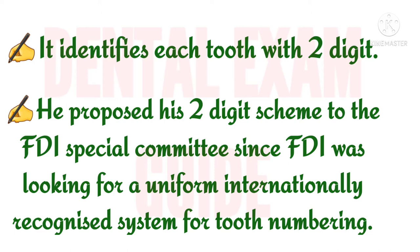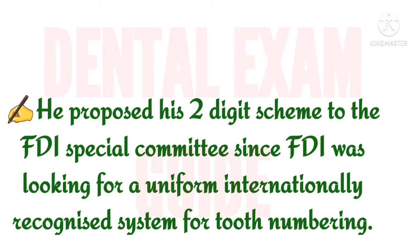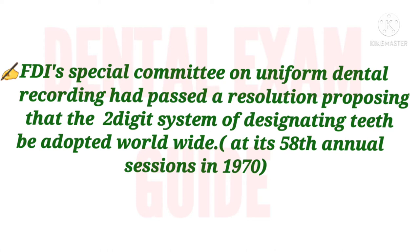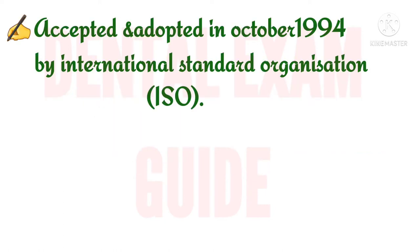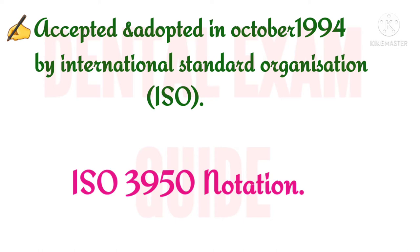FDI was looking for a uniform, internationally recognized system for tooth numbering. Because of the shortcomings of existing systems, FDI's special committee on uniform dental recording passed a resolution proposing that the two-digit system be adopted worldwide. It is now used internationally and is the most widely accepted system, though it is not used in the USA. It was also adopted by ISO in October 1994 and is known as ISO 3950 notation.